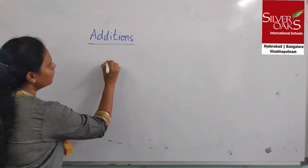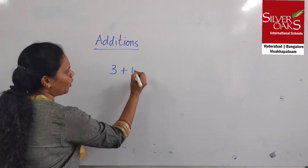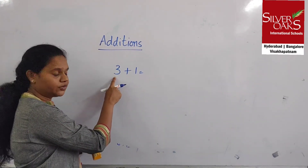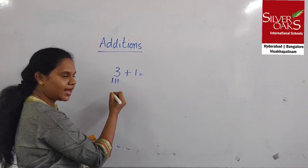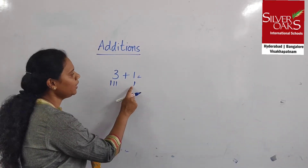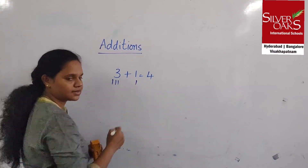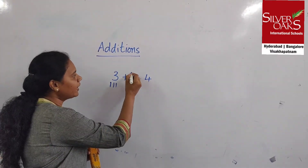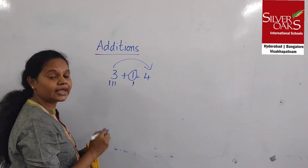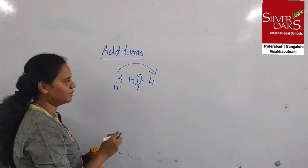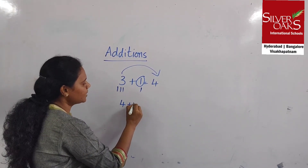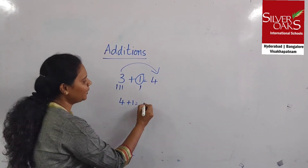Now can I add 1 to any number? Yes, we can add 1 to any number. For 3 I am going to draw 3 lines, and for 1 I am going to draw 1 line. So the answer is 1, 2, 3, 4 — 4 will be the answer. The important point to note is when any number is added to 1, it will be the after number. For 3 the after number is 4. For 4 plus 1 the after number will be 5, and for 5 plus 1 the after number will be 6.